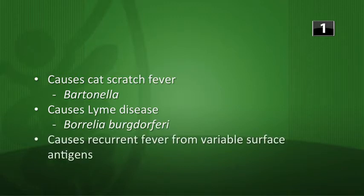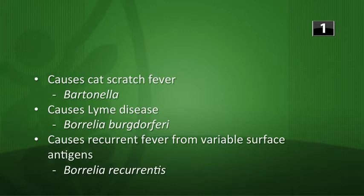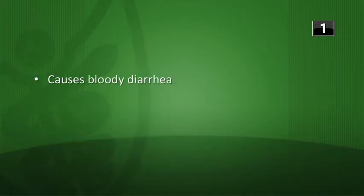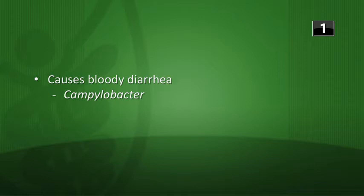Causes recurrent fever from variable surface antigens - that can be Borrelia recurrentis, transmitted by ticks and lice. Causes bloody diarrhea - that's going to be Campylobacter, transmitted by puppies or other pets, livestock, by fecal-oral ingestion, and also by sexual transmission.